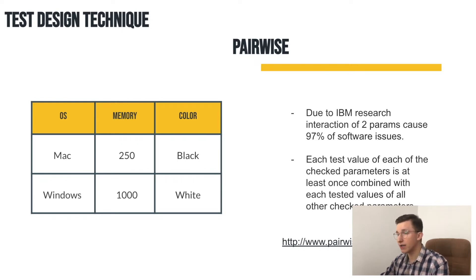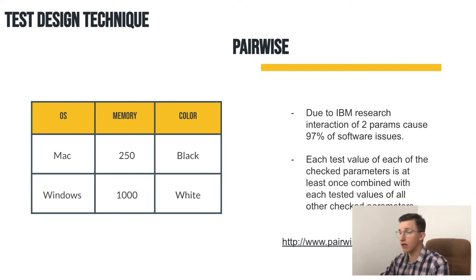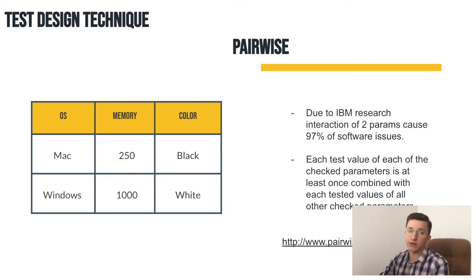To test all possible combinations we need in total eight test cases: two multiplied by two multiplied by two equals eight. But if we have not two test values per checked parameter but, for example, 100 — then 100×100×100 gives us one million test cases. Performing such a great amount of test activities will be very hard, and during execution there will be a lot of human mistakes, because it's combinatorial testing and it's very easy to make mistakes there.